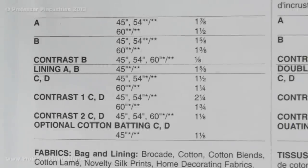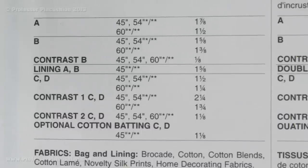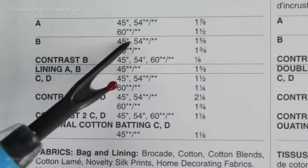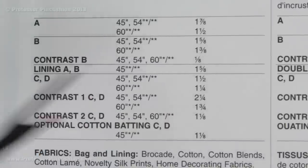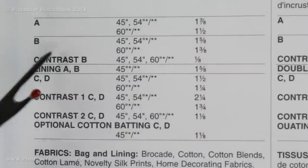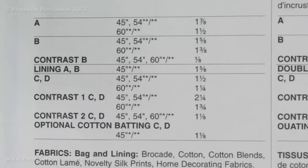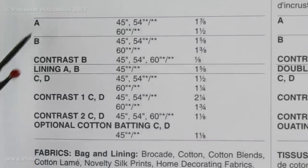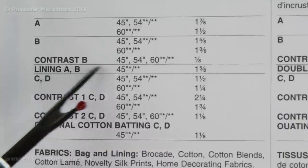Here's the last yardage example, and this one is different because it's actually a pattern for a purse. The nice thing is we don't have to worry about sizes since it's all the same size purse. You just pick which view you want and check the fabric width. For purse B, if you have 45 or 54 inch fabric you need 1 and five-eighths yards, or if you get 60 inch width fabric you need 1 and three-eighths. There's also 'contrast B' because this purse uses two different fabrics — a main fabric and a contrasting fabric — so for the contrasting one you just need an eighth of a yard. Lining is also listed.